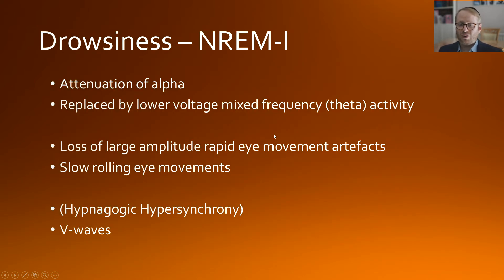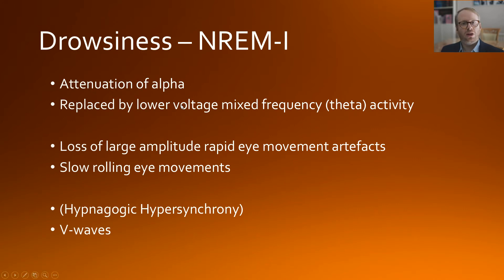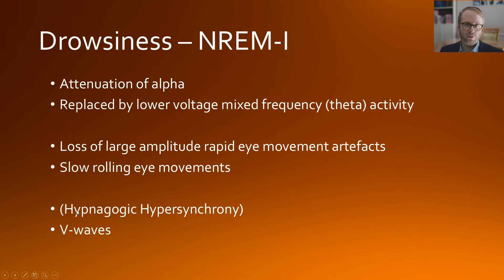Drowsiness and non-REM 1 are a little bit of a continuum. From a sleep scoring perspective we need defined cut-offs, but from a neurophysiologist's point of view what happens is as follows: we get attenuation of alpha activity, which gets replaced by lower voltage mixed frequency theta activity. We lose the large amplitude rapid eye movement artifacts and instead get slow rolling eye movements. At some point there may also be hypnagogic hypersynchrony and vertex waves — V waves.